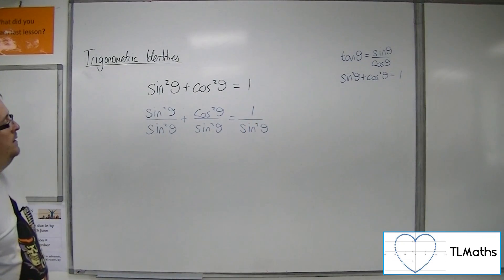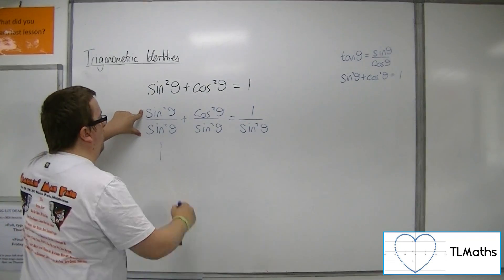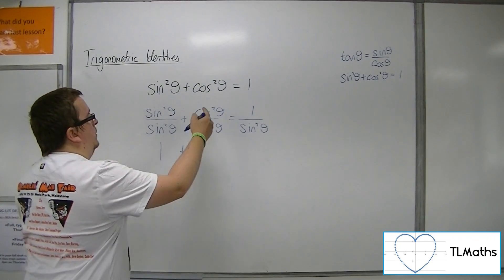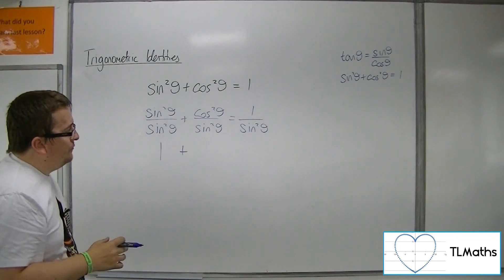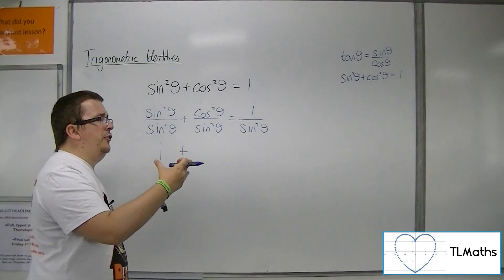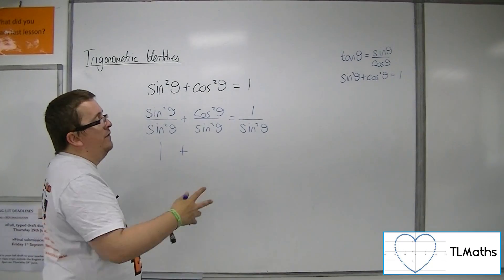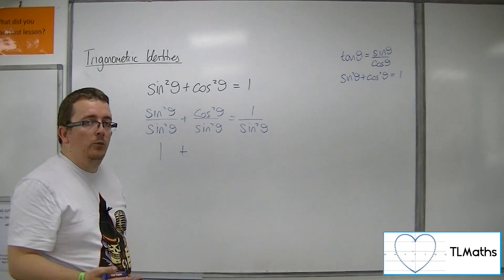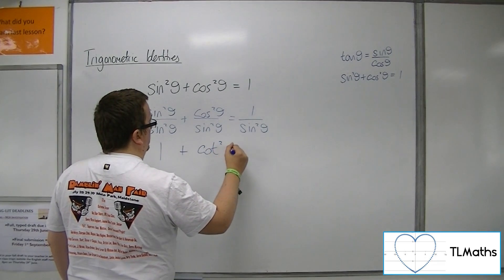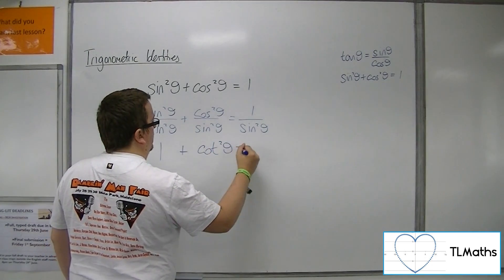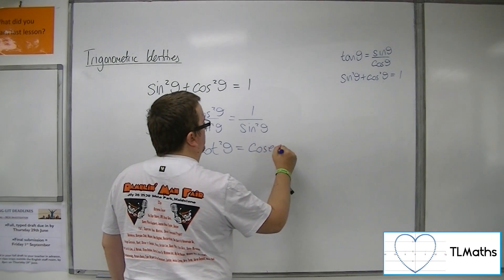Now, sine squared over sine squared is clearly just 1. Cos squared over sine squared — well, sine squared over cos squared is tan squared, so this must be 1 over tan squared, which we know is cot squared. And 1 over sine squared must be cosec squared.